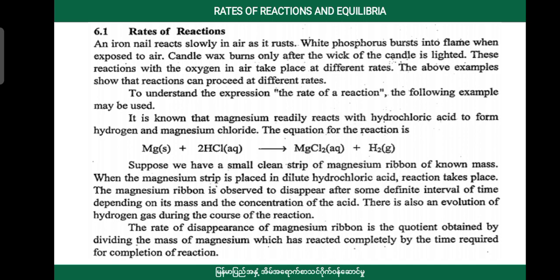It is known that magnesium readily reacts with hydrochloric acid to form hydrogen and magnesium chloride. The equation for this reaction is: Mg(s) + 2HCl(aq) → MgCl2(aq) + H2(g). When the magnesium strip is placed in dilute hydrochloric acid, reaction takes place.